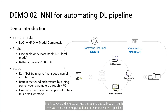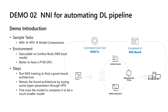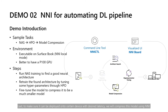In this advanced demo, we will use one example to walk you through how you can use a single tool to automate the entire deep learning pipeline. The demo includes three major parts. First, we will use neural architecture search to find a good architecture. Then we will do hyperparameter tuning on this architecture. Last, to make sure it can be deployed onto a certain device with desired latency, we will compress this model using NNI.